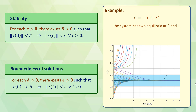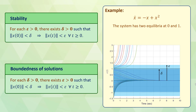In fact, for any epsilon less than 1, we can choose delta to be equal to epsilon. If epsilon is chosen to be larger than 1, delta can be chosen to be 1 or a value smaller than 1, and the origin is stable according to the definition.